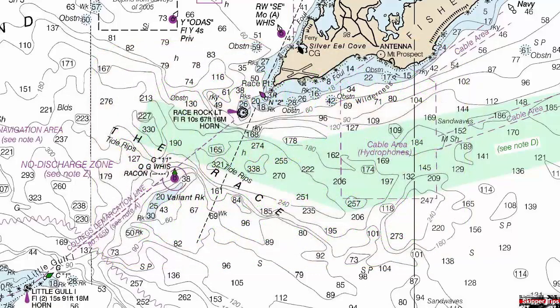Here we're looking at the race in New England, and notice the tidal rips between race rock light to starboard and lighted whistle buoy number 11 to port. If possible, we want to transit a difficult area like this at slack water. This will make navigation safer and easier. Think of slack water as that period of time measured in minutes where the current velocity or speed will be less than half a knot.